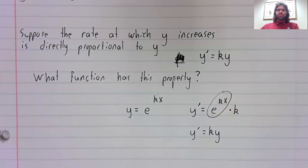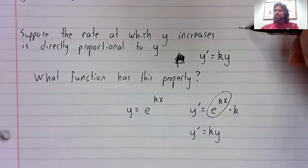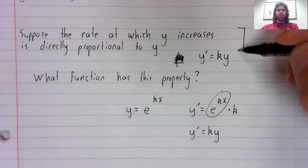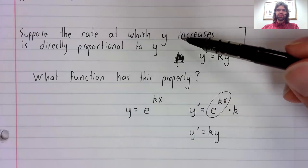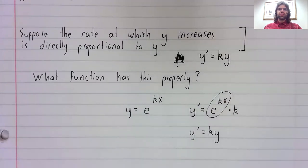So the exponential function e to the x is so important because it shows up every time we have a situation like this, and situations like that are fairly common.